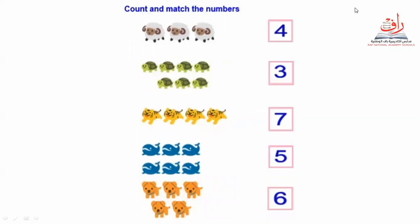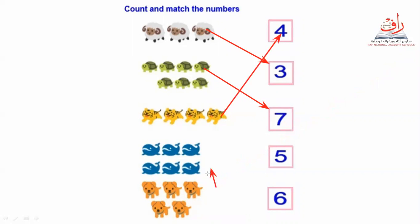Okay, last picture for today — count and match the numbers. Let's count how many sheep: one, two, three — match to three. What about turtle? One, two, three, four, five, six, seven — match to seven. Lion: one, two, three, four — match to four. Dolphins: one, two, three, four, five, six — six dolphins! Dogs: one, two, three, four, five — match to five!